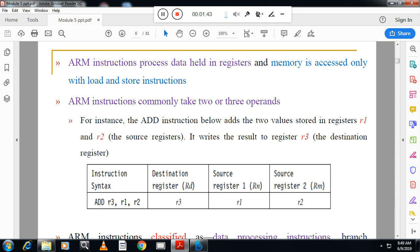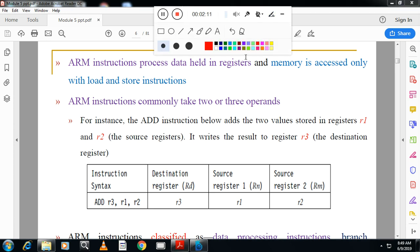So normally ARM instructions process data held in registers and memory is accessed only with load and store instructions. ARM instructions commonly take two or three operands. For instance, the ADD instruction below adds the two values stored in registers R1 and R2, the source registers. It writes the result to register R3, the destination register.